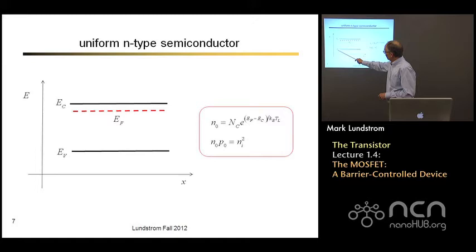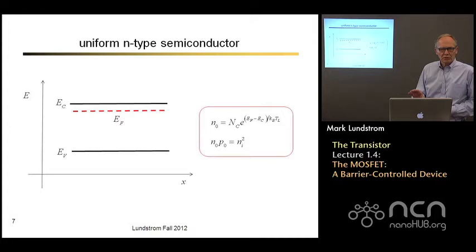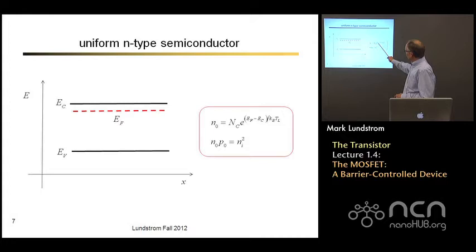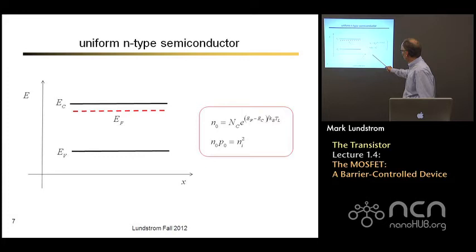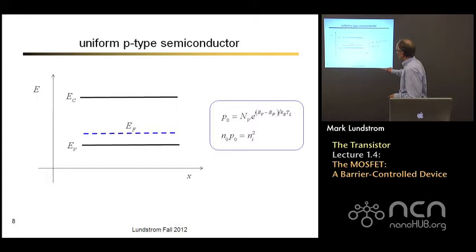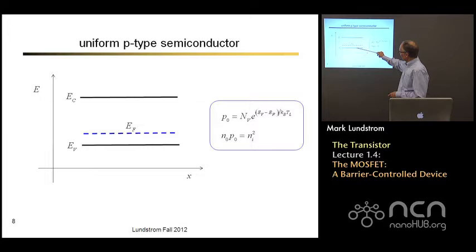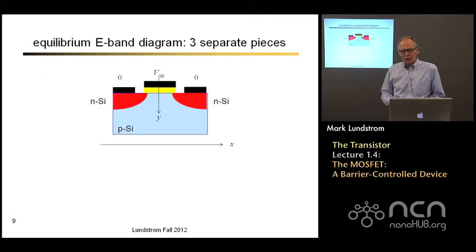For a uniform n-type semiconductor, the energy band diagram — energy versus position — is just two straight lines: bottom of the conduction band and top of the valence band. The Fermi level is up near the conduction band, denoting a few electrons there. The electron density is exponentially dependent on the separation between the bottom of the conduction band and the Fermi energy. And the product of electron density and hole density always equals Ni squared in equilibrium. For a uniform p-type semiconductor, the Fermi level is down near the valence band, and the hole density is exponentially related to the separation between the Fermi energy and the top of the valence band.